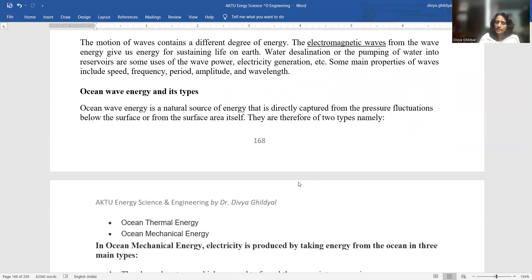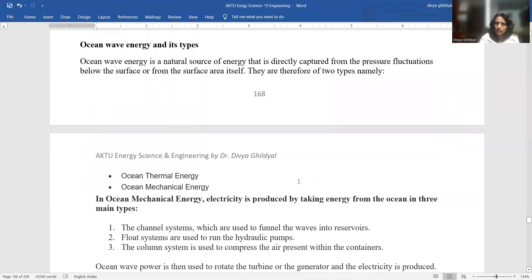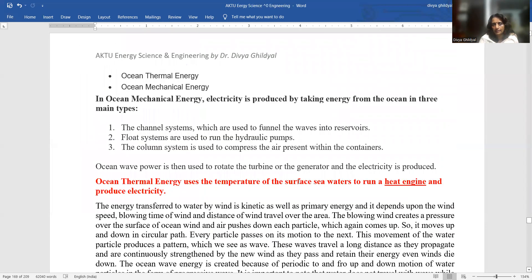Ocean waves energy and its type. Ocean wave energy is a natural source of energy and is directly captured from the pressure fluctuations below the surface or from the surface area itself. They are basically divided into ocean thermal type and ocean mechanical type.